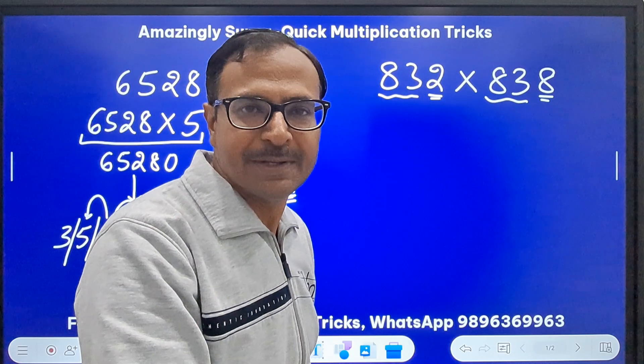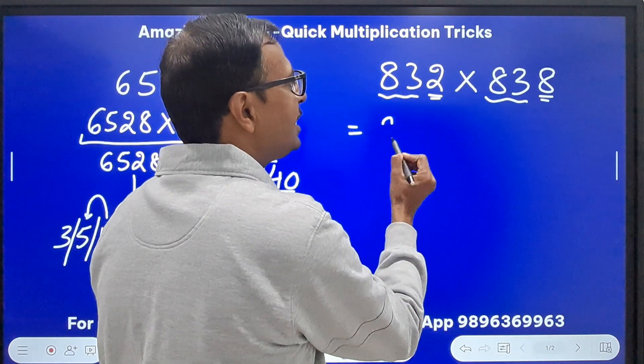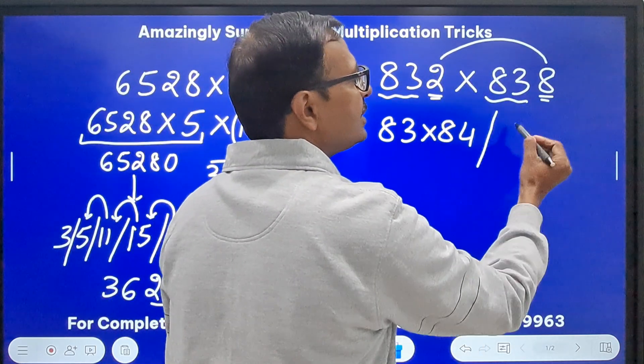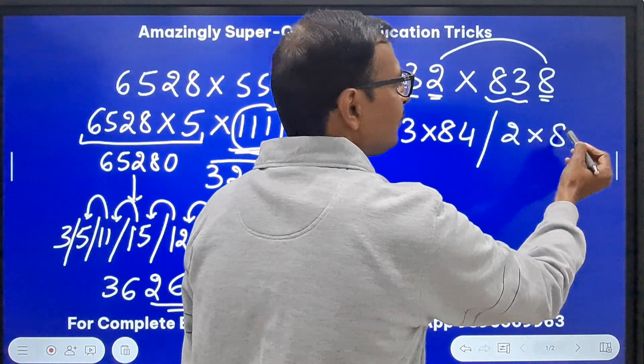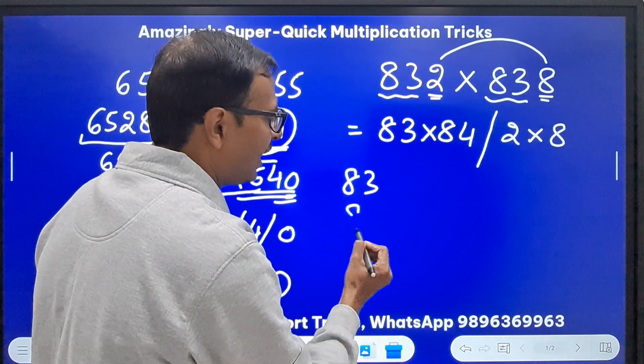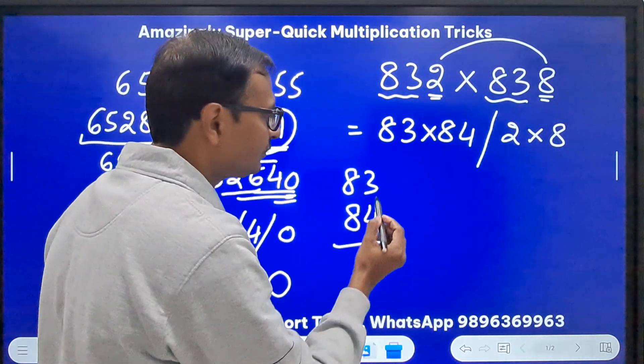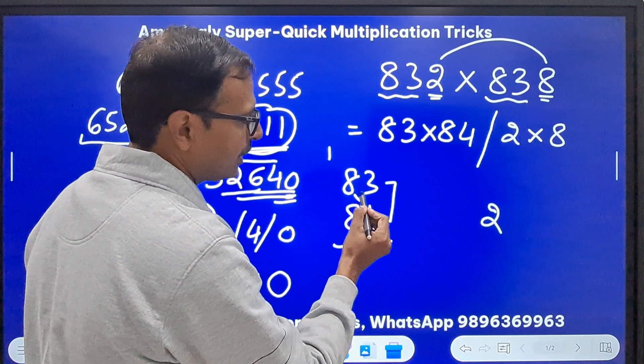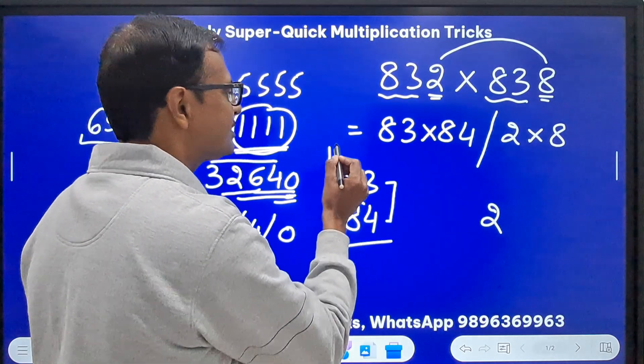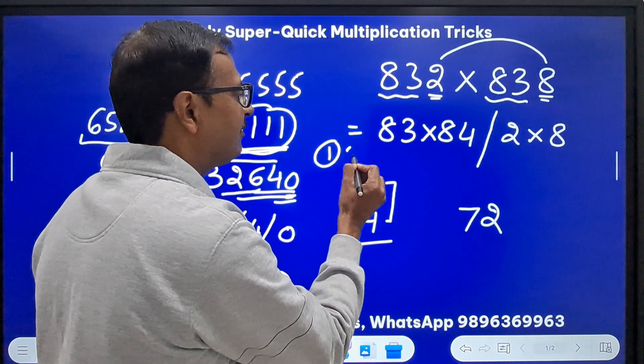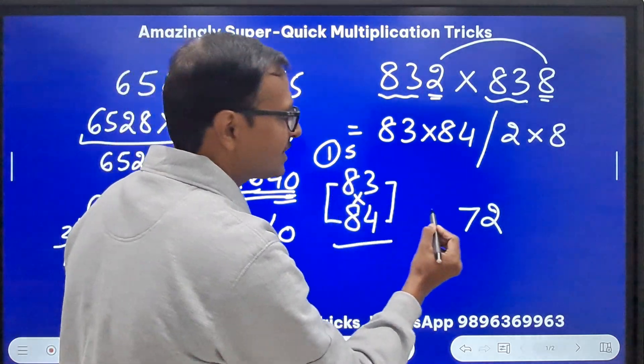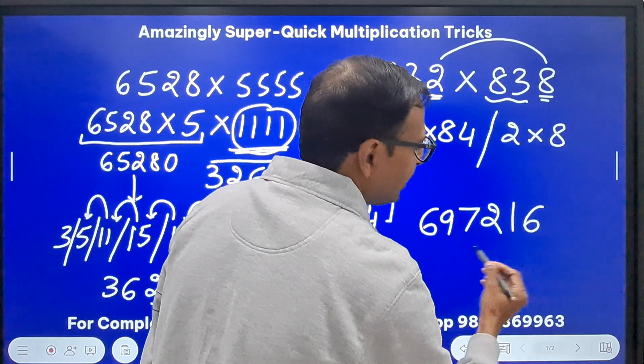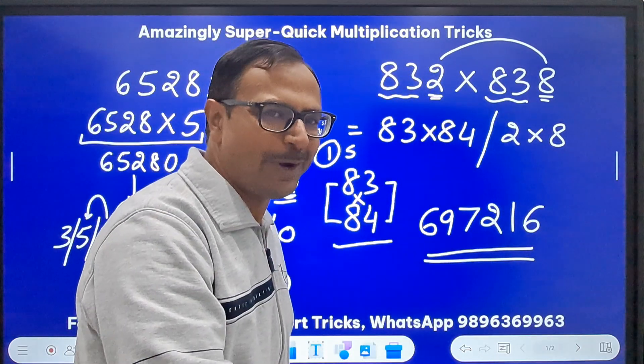Whenever you have this criteria being followed by the numbers, what do you have to do? Take 83 and multiply it by the consecutive number 84, and then multiply the unit digits 2 into 8. How do you multiply 83 and 84? I will go for the vertically and crosswise method. This is 12, so 2 one carry. 32 and 24, 32 and 24 is 56 plus 1 is 57, so 7. And if I carry, 8 times 8 are 64 and 5 is 69, so 6. 972. And 2 times 8 are 16, just write here.